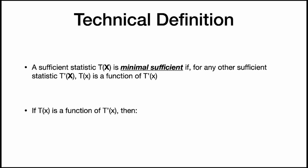What this means is: if t(x) is a function of t prime of x, then when t prime of x equals t prime of y for two different data sets, that means t(x) equals t(y). So if we have any sufficient statistic and they are equal to each other, the minimal sufficient statistic will also be equal to each other. That's what it means to be minimal sufficient.